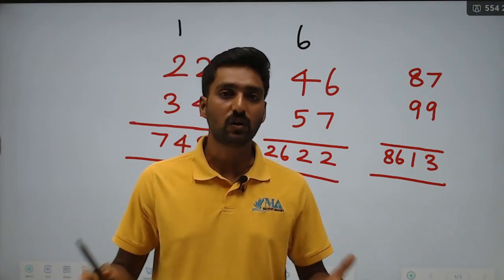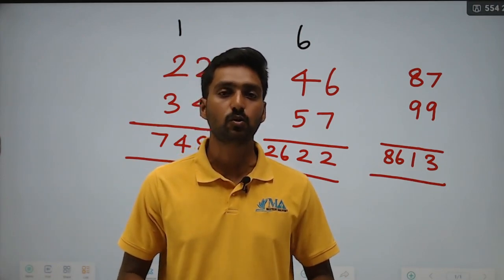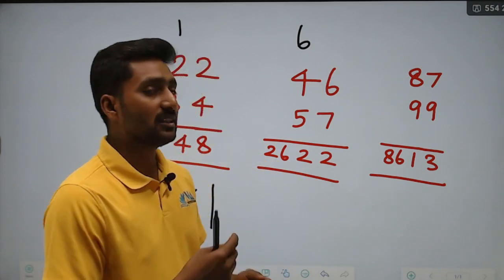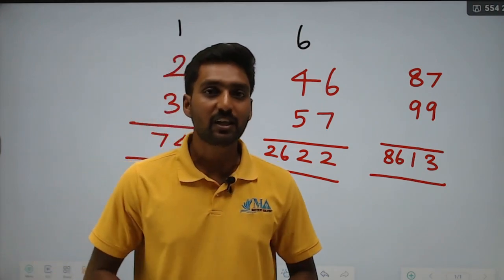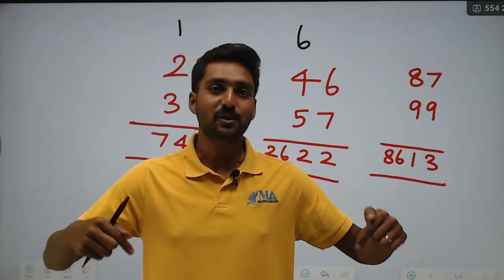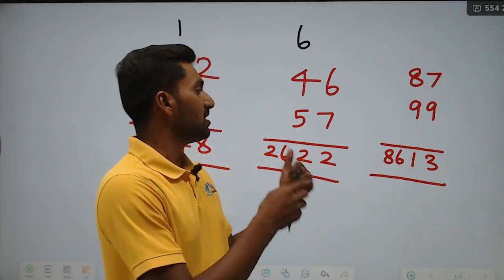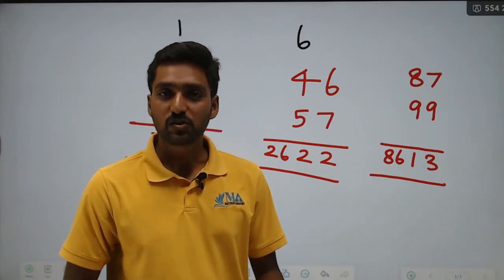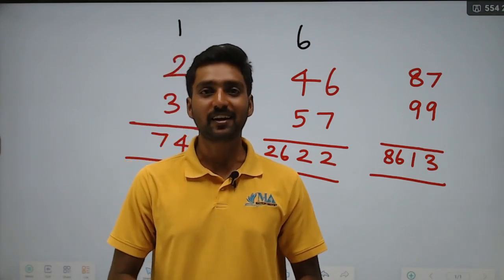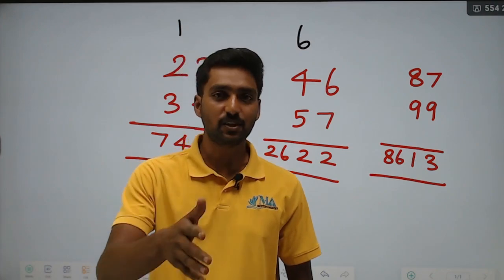On the Masters Academy YouTube channel, one by one there are all questions: three-digit numbers, square, cube, perfect cube, perfect square root — there are short tricks. If you have missed any video, press the bell button and subscribe to the Masters Academy YouTube channel. Please like, comment, and share with your friends. Thank you, see you soon.